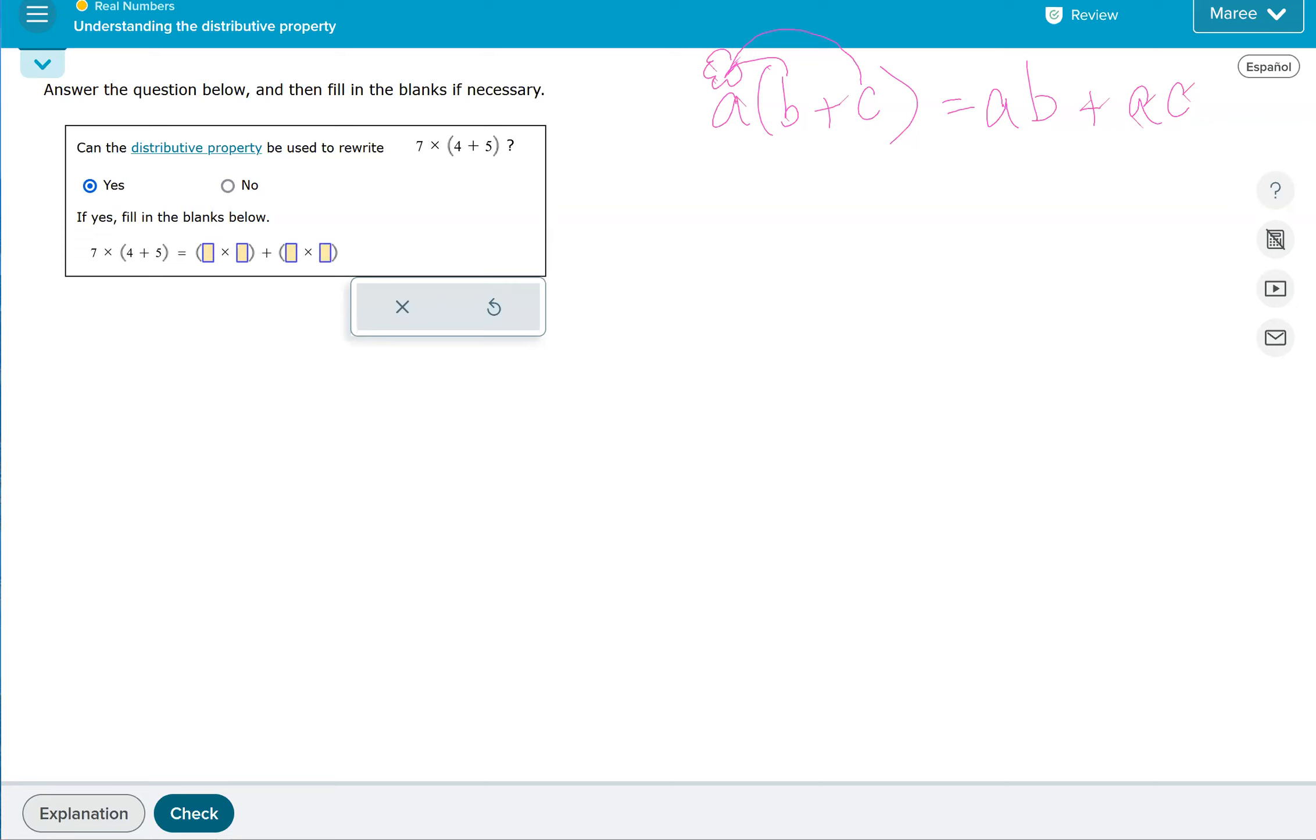To fill it in, we have 7 times 4 and then 7 times 5. So we took that 7 on the outside, put it in both of those parentheses, and then split up the 4 and 5 with the 7.